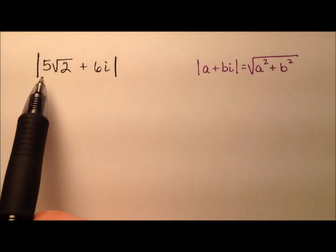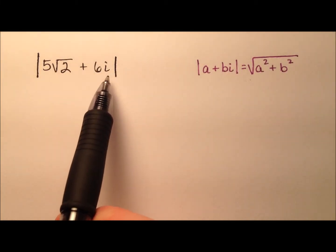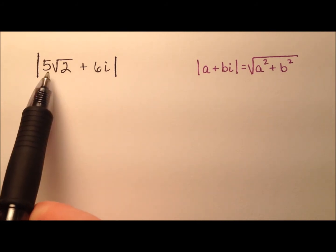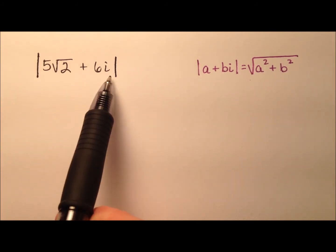In this example, we're going to calculate the absolute value, or the modulus, for this complex number, 5 radical 2 plus 6i.